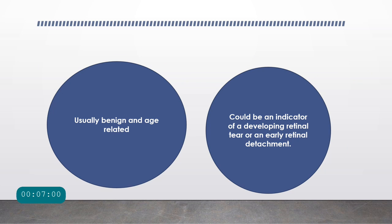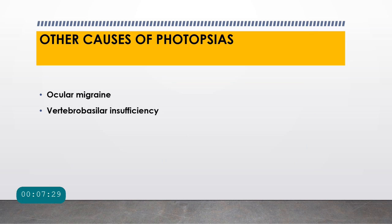So are flashes dangerous? Flashes are usually benign. They are age-related since vitreous degeneration and posterior vitreous detachment are seen with age, so for most cases it is usually benign. However, when there are photopsias, peripheral ophthalmoscopic examination is very important, because photopsias might be an indicator for developing retinal tear and sometimes early retinal detachment as well.